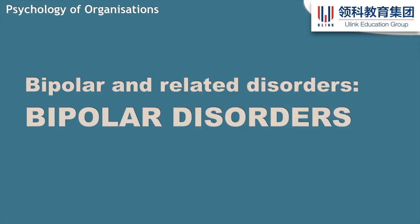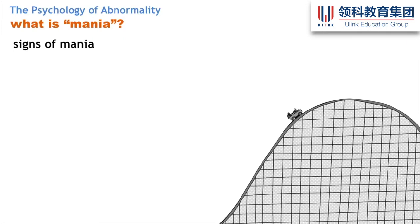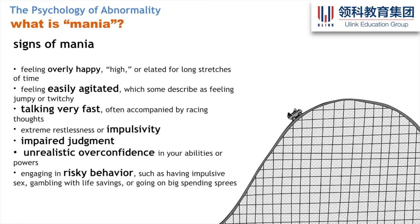Mania involves feeling overly happy, being easily agitated, talking a mile a minute, being quite impulsive, acting without thinking, having impaired judgment, being overconfident — maybe thinking you're Superman — and doing risky things. That can include unprotected sex, gambling away your life savings, or going on huge shopping sprees at two o'clock in the morning buying things off Amazon. Don't self-diagnose — that can be dangerous. Sometimes you just have short elevated moods. Usually for mania to qualify as mania, it's got to be at least a week long of this kind of behavior.